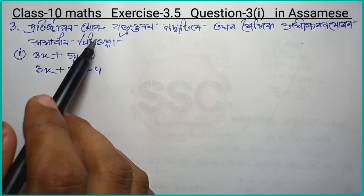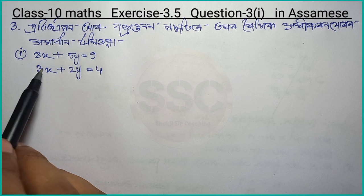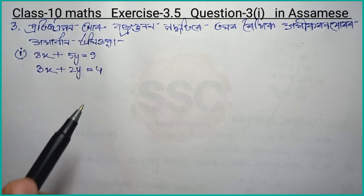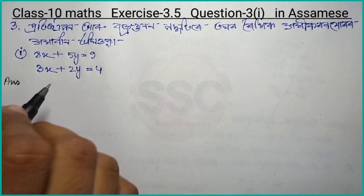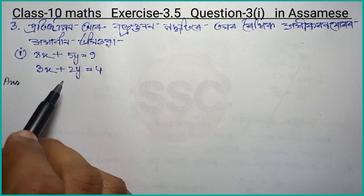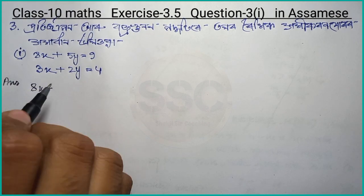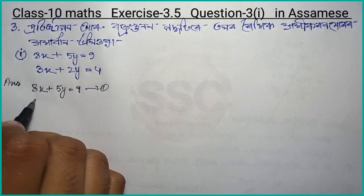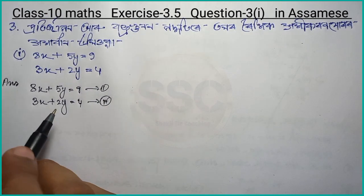The first question is: 5y equals 9. Now I will name this equation 1. And 3x plus 2y equals 4 — I will name this equation 2.